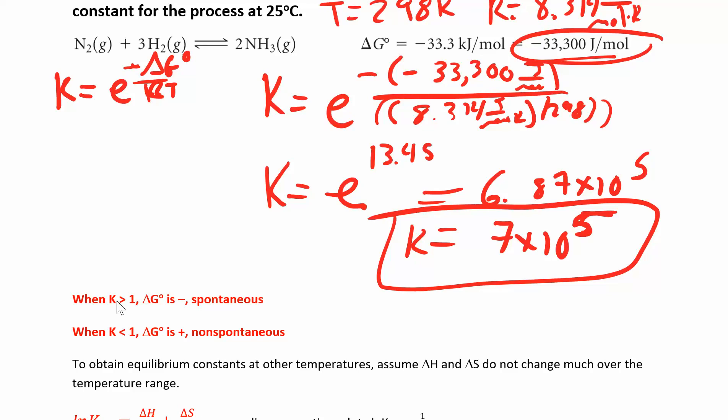If you have a really big K, something a lot bigger than 1, delta G is negative. The reaction is going to be spontaneous. When you have a K that's really small, delta G naught will be positive and the reaction will be non-spontaneous. So just by looking at how big your K is, you can tell about delta G naught, or the other way around. If you know what delta G naught is, you can approximate what your K is going to be.